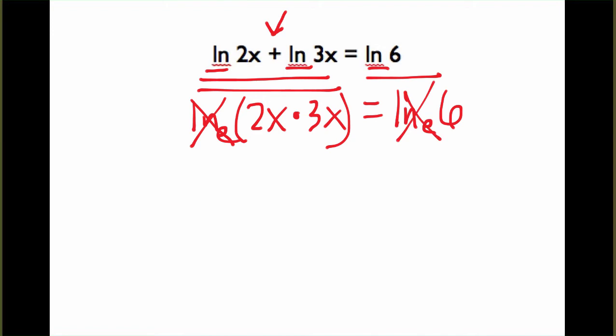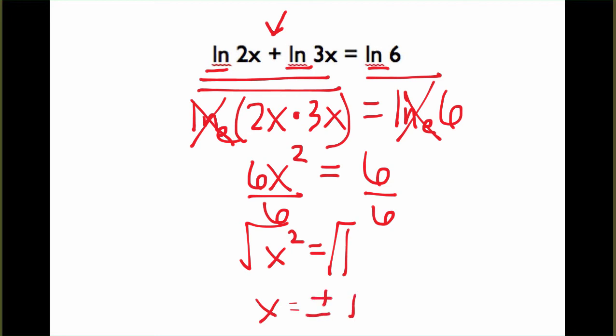So those cancel, and on the right, when I multiply 2x times 3x, I get 6x squared. I guess that was on the left, sorry. On the right, I just have 6. So solving for x, I get x squared equals 1. If I take the square root, x will equal a positive or a negative 1.